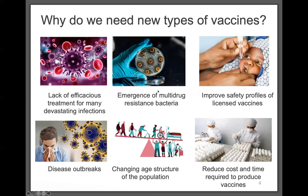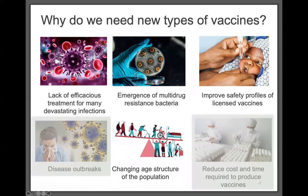So why do we need new types of vaccines? There are a number of challenges we're trying to overcome. The first is the lack of efficacious treatment for many devastating infections. There's also the emergence of multi-drug resistant bacteria. We're also always seeking to improve the safety profiles of licensed vaccines, preparing vaccines for disease outbreaks, addressing the changing age structure of the population with more elderly people, as well as reducing the cost and time required to produce vaccines.